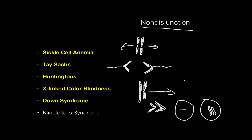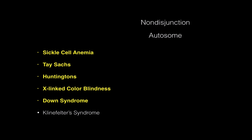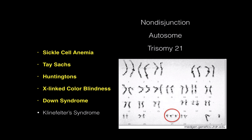Non-disjunction for Down syndrome is caused by chromosome number 21. It's an autosome because chromosome number 21 has nothing to do with sex chromosomes — therefore, males and females can both be born with Down syndrome. Another name for it is trisomy 21 because you have three copies of chromosome number 21, which means either the egg cell or the sperm cell was carrying two rather than just one copy of chromosome 21. It's called trisomy 21 — a non-disjunction of an autosome.